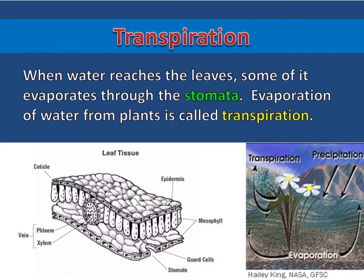Now let's talk about how plants respond to losing water. When water reaches the leaves, some of it evaporates through the stomata. Evaporation of water from plants is called transpiration.